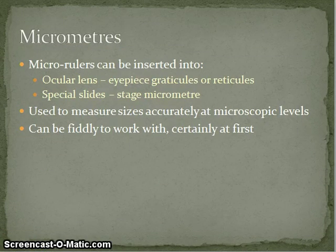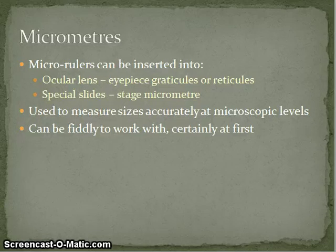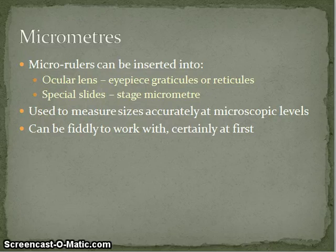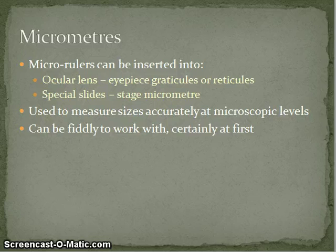Micrometers are both a unit of measurement and a shorthand for the rulers used to make those measurements. Depending on where you place the micrometer, it gets a different name: in the ocular lens it's called an eyepiece graticule or reticule, and on a special slide it's called a stage micrometer. These can be a little fiddly to use, so we're going to teach you an easy way to measure things relatively accurately — certainly suitable for school level.